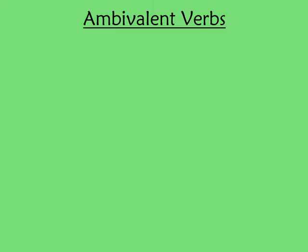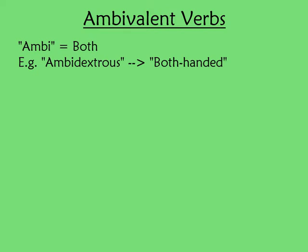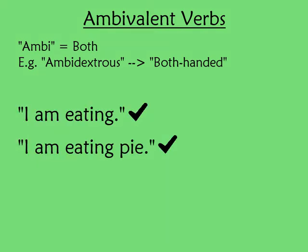Regarding the first question, a verb can be what's called ambivalent. 'Ambi' means both, like the word 'ambidextrous.' Verbs that are ambivalent can either just have a subject, or can have a subject and an object, and both are perfectly fine. For example, it's perfectly valid to say 'I eat' — meaning you eat in general — as well as 'I eat pie,' specifying what you're eating.